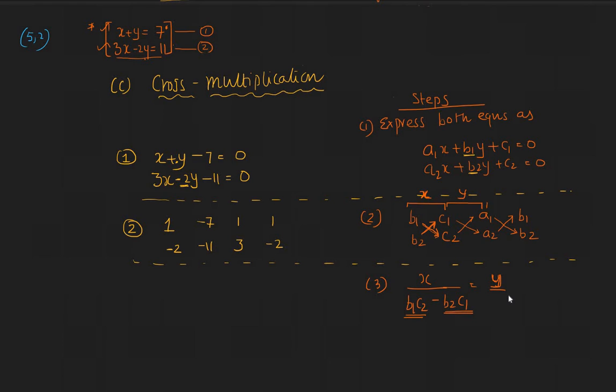This would be 1. You can remember it: x by this quantity, which is b2 c1, that is equal to y by c1 a2 minus c2 a1, and that's equal to 1 divided by a1 b2 minus a2 b1.